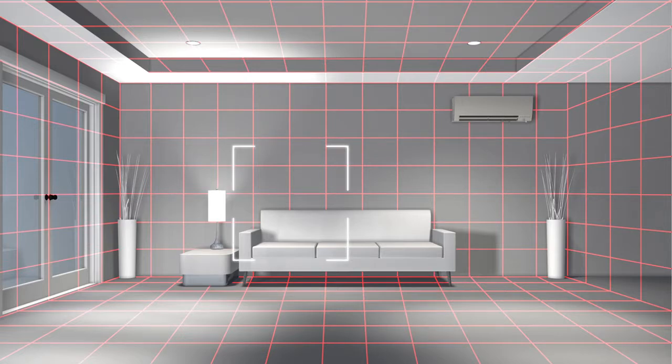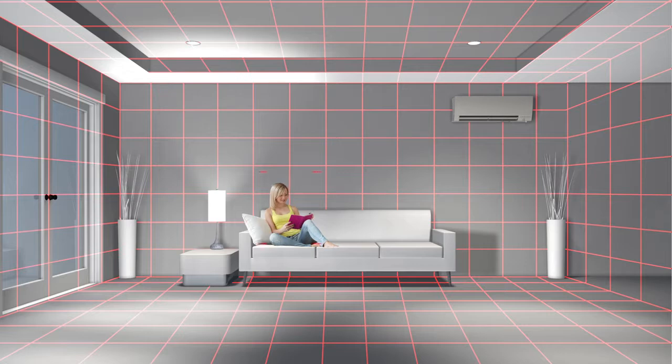When the space is occupied, the 3D IC Sensor identifies the heat signatures and directs the indoor unit to apply cool or warm air as needed.